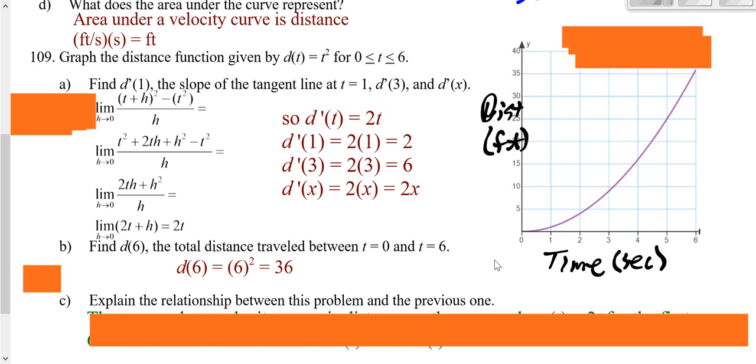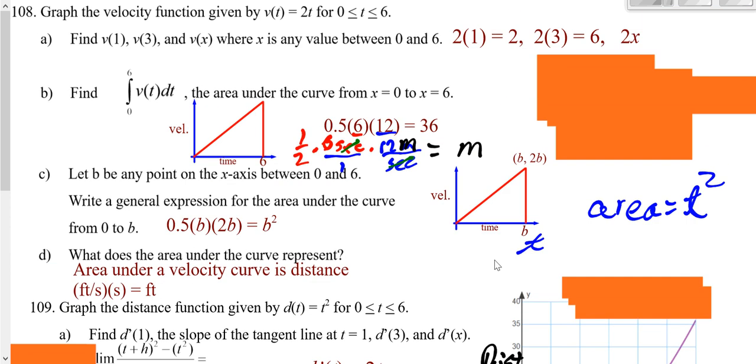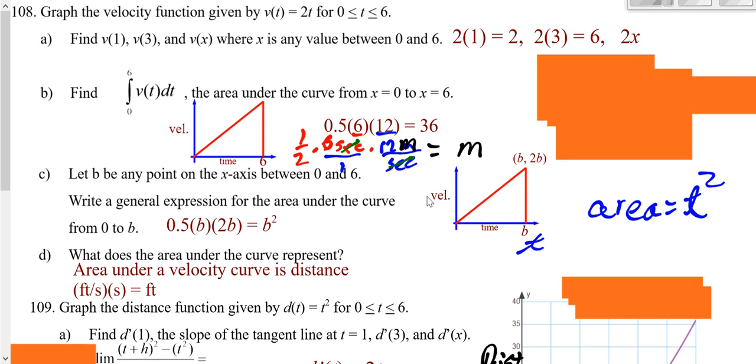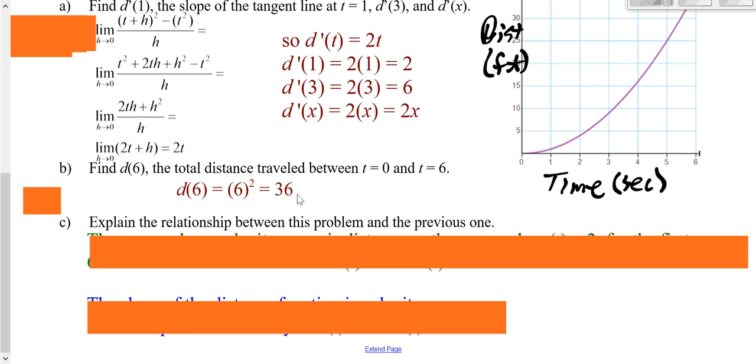Now hopefully you notice there's quite a few correlations between some of the answers in 109 and your answers in 108. Notice how the answers for part A up here match with your answers in part A down here. Your answer in part B up here matches with your answer down here. So what's really going on here? What's the relationship between 109 and 108?